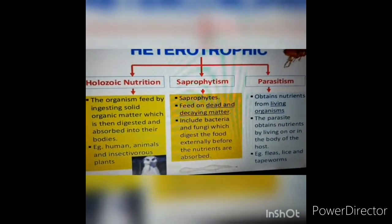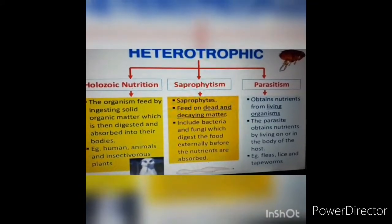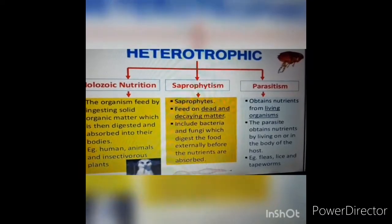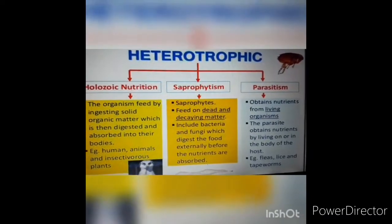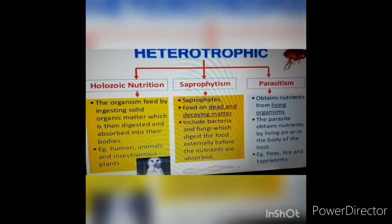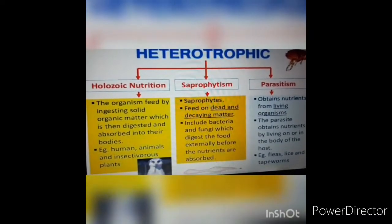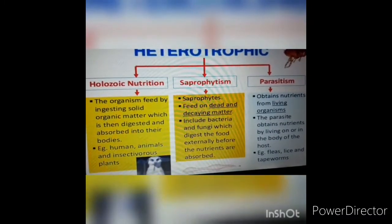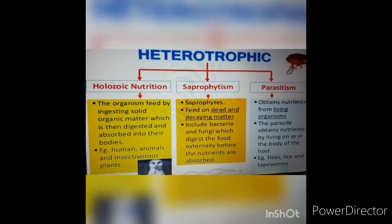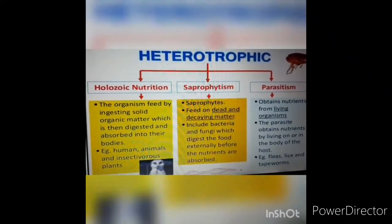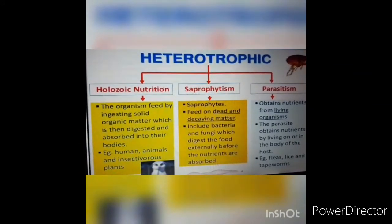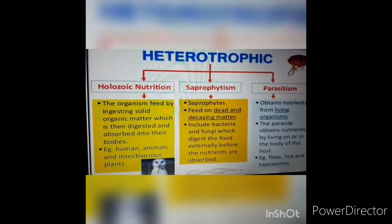The second category is saprophytes — those which derive their food from dead and decaying matter. They depend on others for food but do not harm them. Mainly bacteria and fungi are examples of saprophytes; all decomposers fall in this category. The third and most important category, which is new for you, is holozoic nutrition. 'Holo' means whole — those animals which take in whole solid food and digest it in their body. Example: human beings.